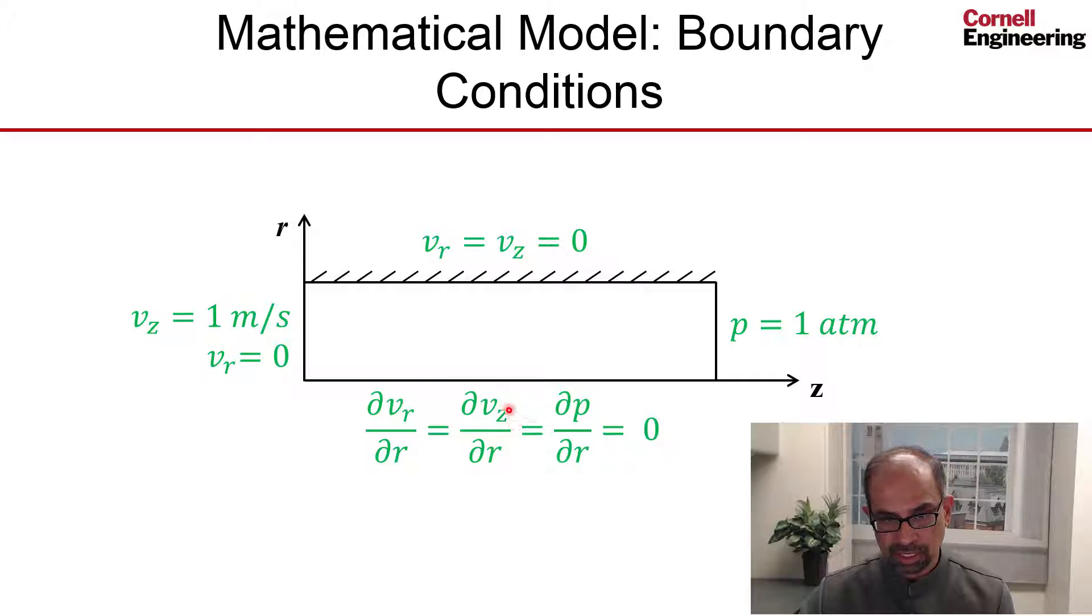And at the axis of symmetry, we set the radial derivatives of velocity and pressure to be zero, because there can be no variation of velocity and pressure in this direction, in the radial direction, at the axis of symmetry.